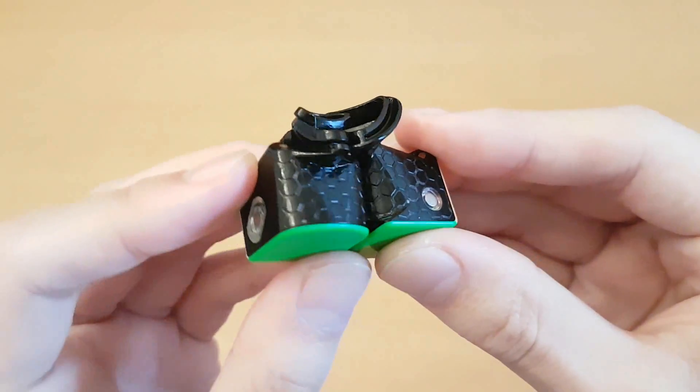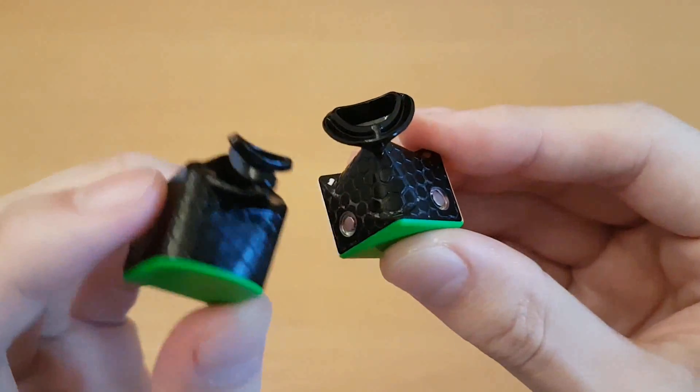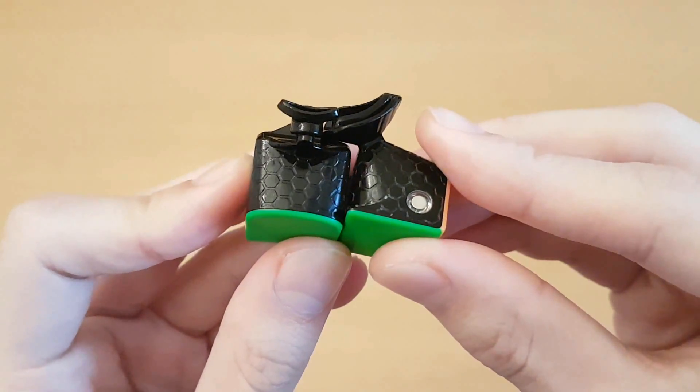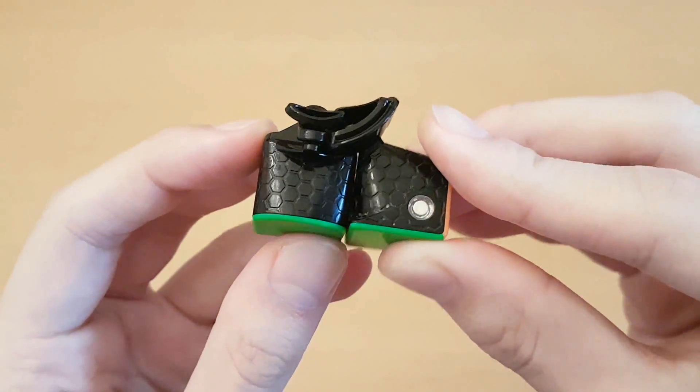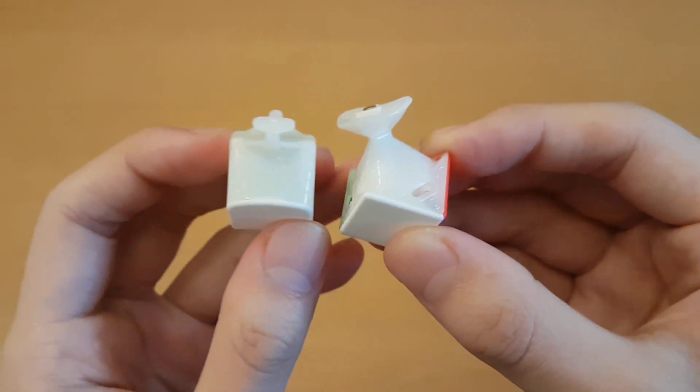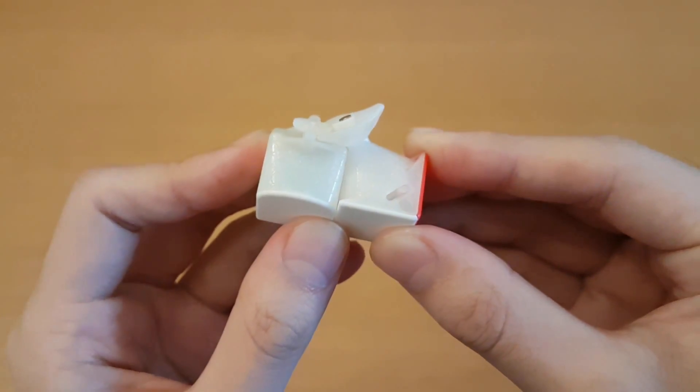Now, the way the pieces are designed on the XS, it's kind of like there's two tracks here on the corner that one of them sits inside the edge piece, and the other one still rubs along it. And on the GAN 11, it's pretty much just one flat surface on the corner that sits with the edge. So they did change the piece design.